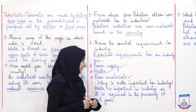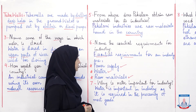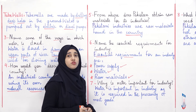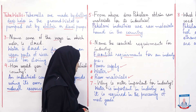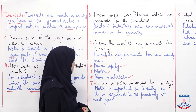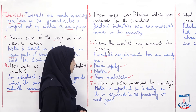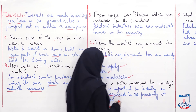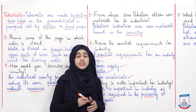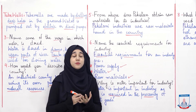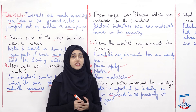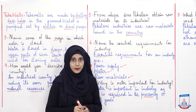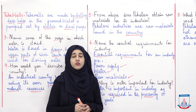Question seven: why is water important for industry? Ab woh aapse pooch raha hai ki kisi bhi industry ke liye paani kyun zaroori hota hai. So water is important in industry as it is required in the processing of most goods. To water isliye important hota hai because it is required in the processing of most goods. Processing hum kehte hain kisi bhi process ko chalana — koi bhi process joh koi cheez banane ke liye chalaya jata hai, us mein hume most of the times paani bhi required hota hai different industries mein. Isliye water is an important requirement for different industries.